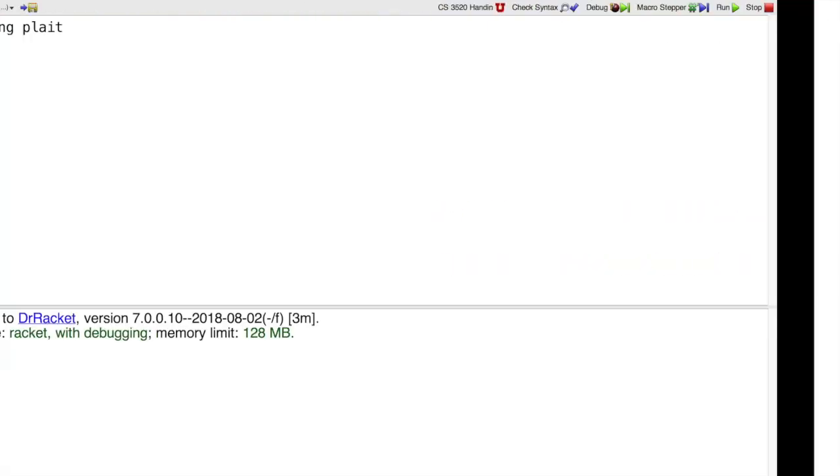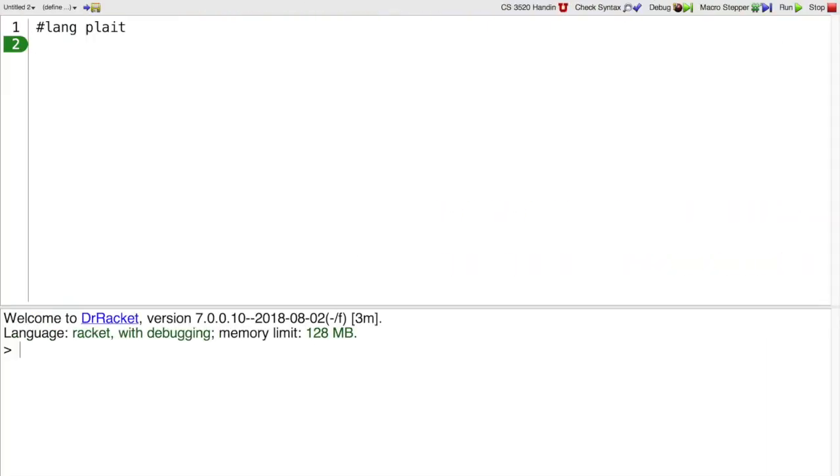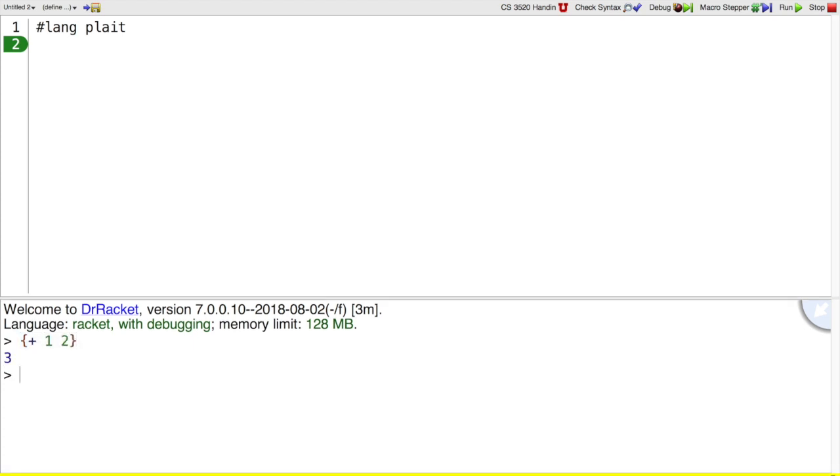If you go into Dr. Racket and you just type plus one, two, it turns out that that also overlaps with the Racket syntax, since curly braces and round parens and square brackets are all interchangeable. So we can't actually write a program for curly using curly brace plus one, two like that.